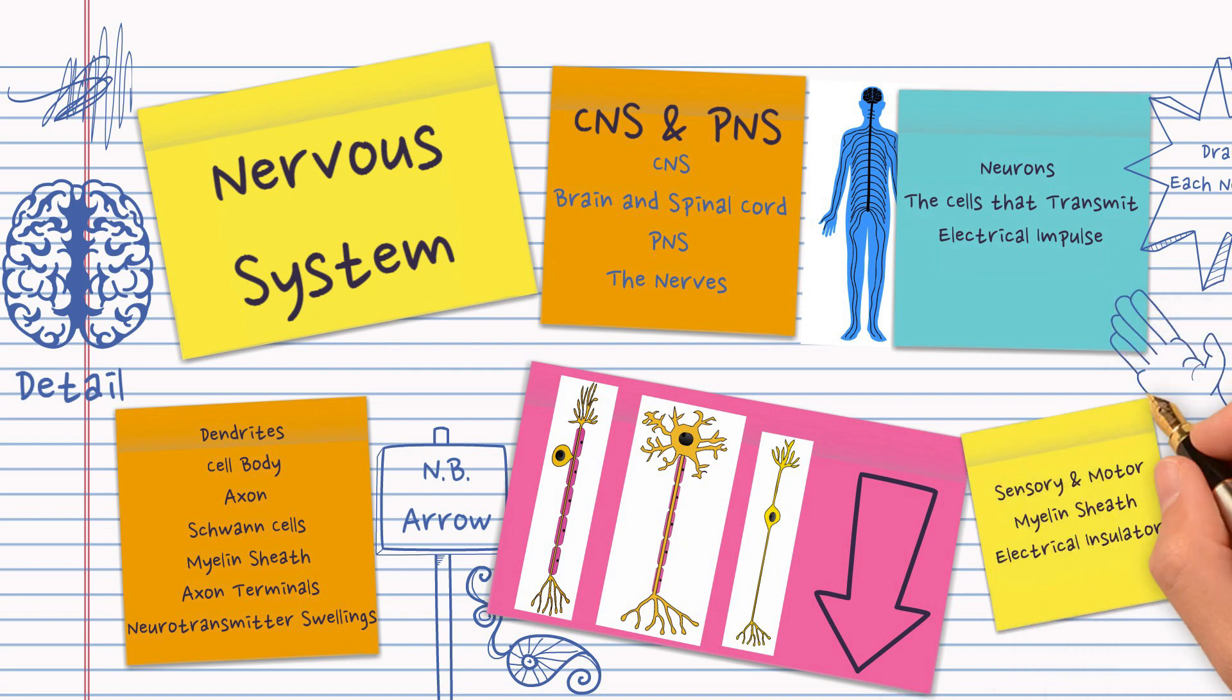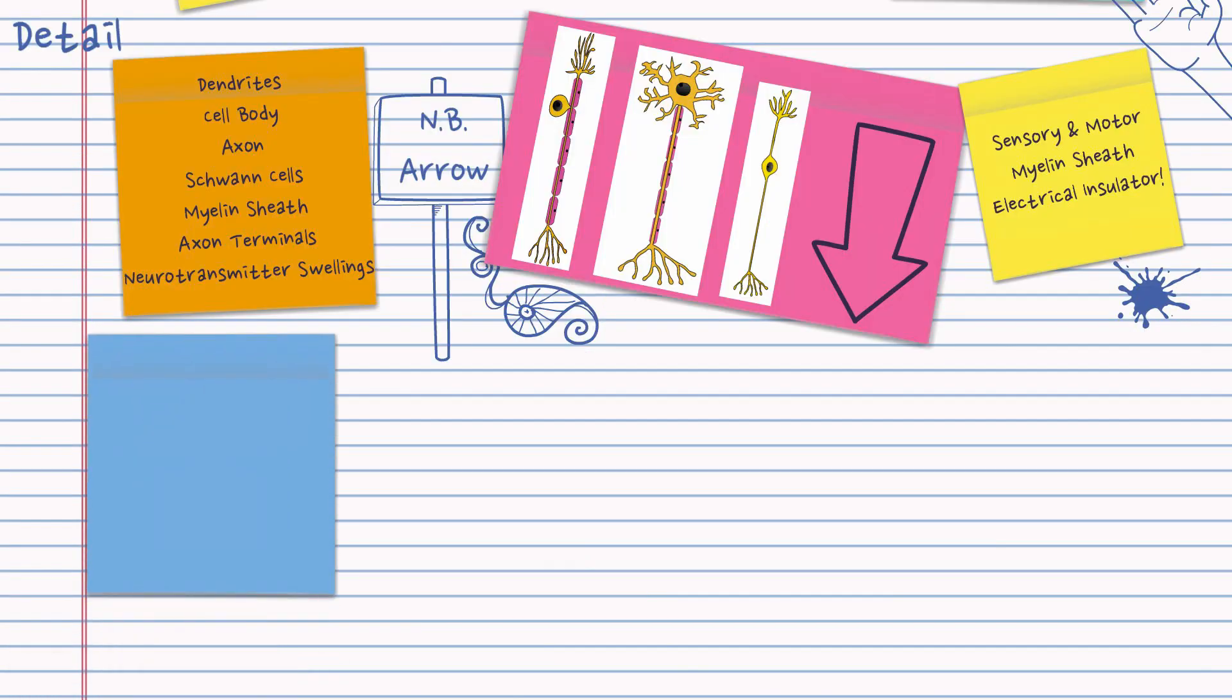So you can see on the sensory and motor neurons the myelin sheath is acting as that electrical insulator. The myelin sheath is also important because it speeds up the transmission of the impulse which we're going to look at now.